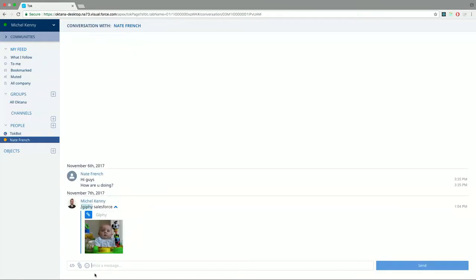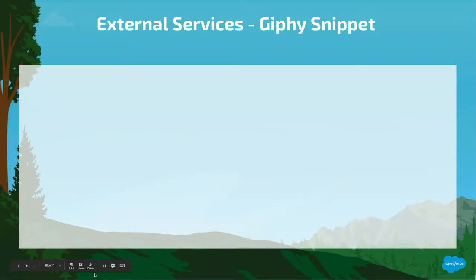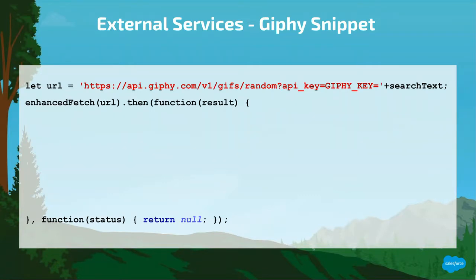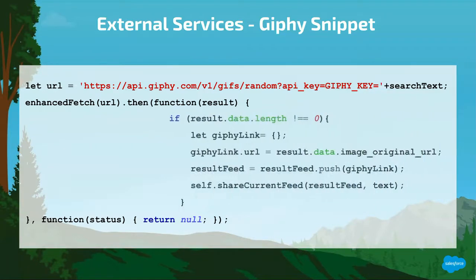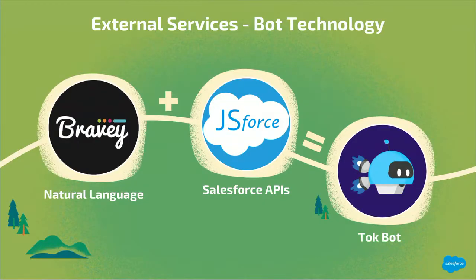Dagoberto will explain the implementation code. To post a feed with the Giphy, we create a variable with the Giphy API endpoint plus the Giphy key and the text we want to search. Next, we execute the request, and with the result we create an object where we save the address of the GIF. This object is added into an array where we have all the values of the feed stored. Finally, we post the feed with the address of the animated image as a link. You can go to developers.giphy.com to find all the information on their APIs and how to integrate it with your applications.